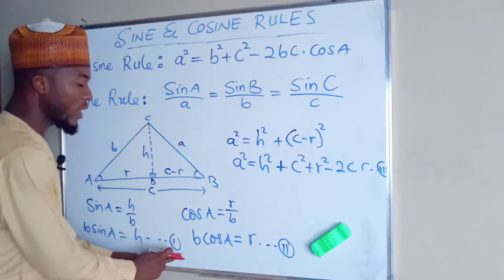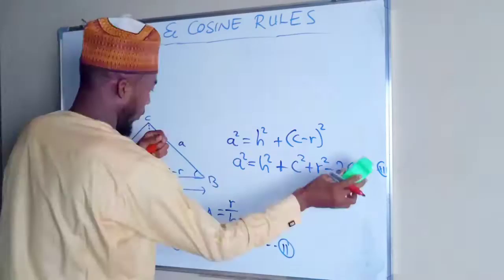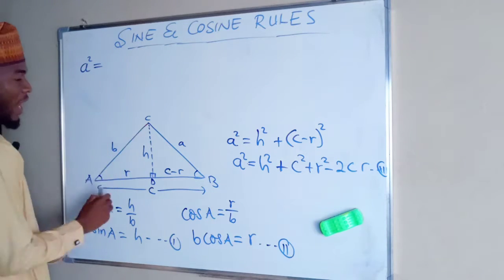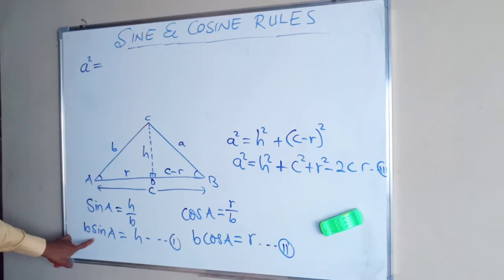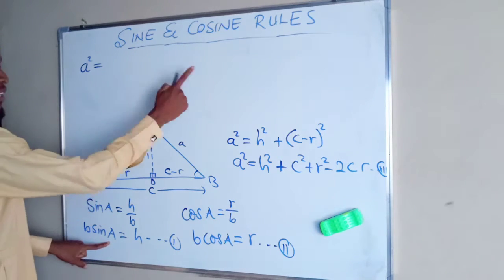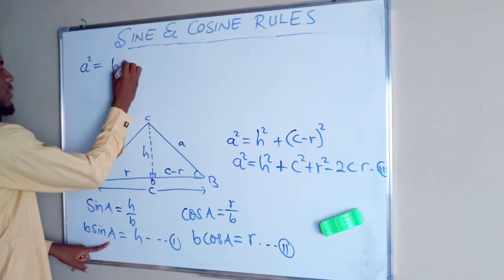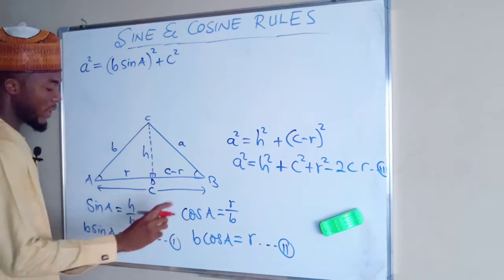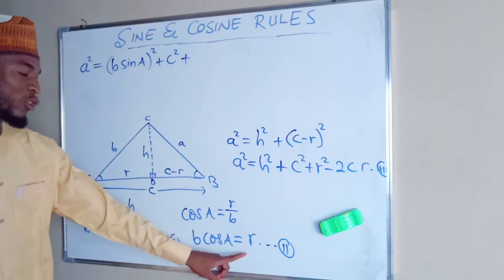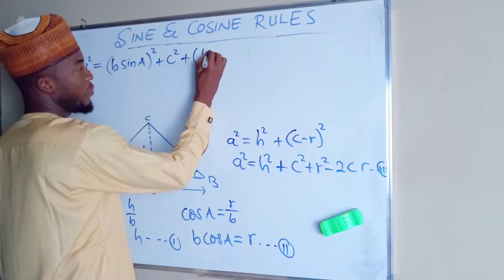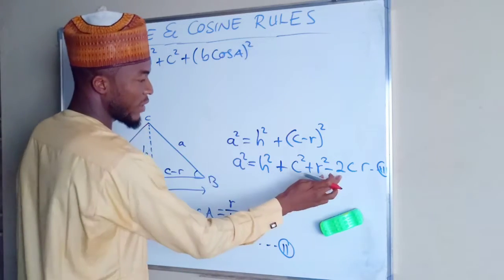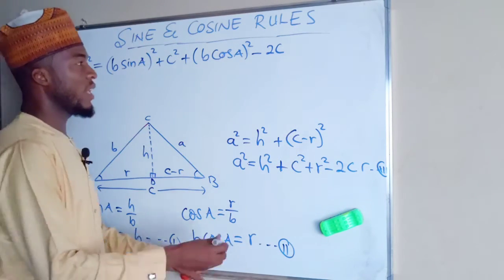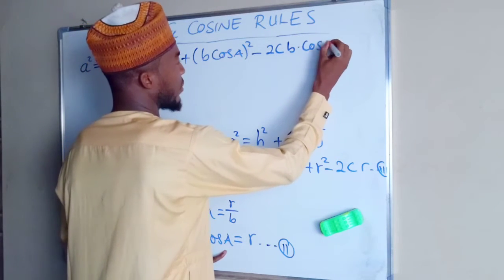Now we substitute equation one and equation two into equation three. From equation one, H = b·sinA, so H² becomes (b·sinA)². From equation two, R = b·cosA, so R² becomes (b·cosA)². Substituting: a² = (b·sinA)² + c² + (b·cosA)² − 2c·(b·cosA).